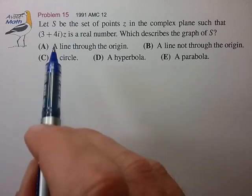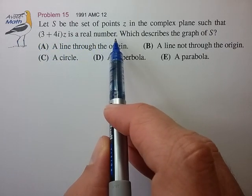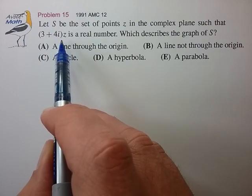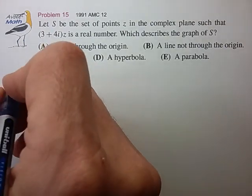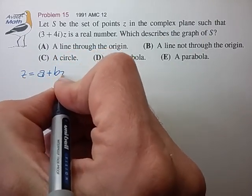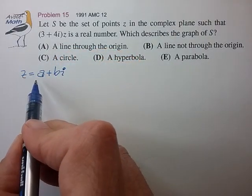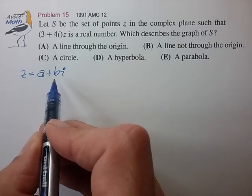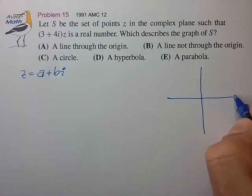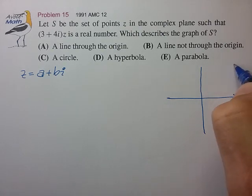All right, we're given the condition that this product is a real number, and we're trying to understand where that places z on the complex plane. So let's write z in its most general form, a plus bi, and our goal is to understand how a and b are related. In essence, we're trying to figure out where on the complex plane z is located.